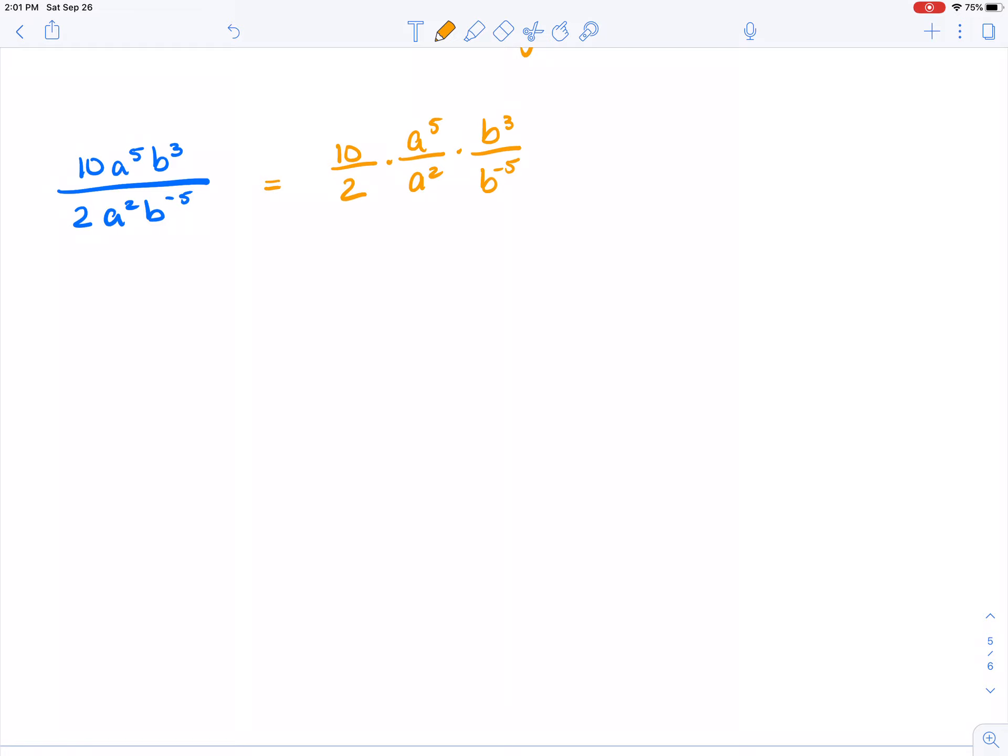Next I identify my exponent law. As we see, this is the quotient of powers law because they're all fractions. We have quotient of powers law three times. So that means I can go ahead and solve based on the quotient of power law.